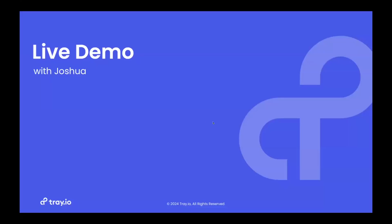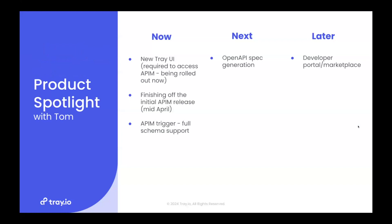Thank you very much, Luke and Joshua. Great to see that in action. What we've really done here is just an experience that enables you to basically instantly expose any Tray workflow as an API endpoint, whatever your use case might be — and that was the goal we set out with this functionality. I'll dive straight in because I know there have been a few questions around availability. Joshua was using the new Tray UI to access the API management functionality. Some of you are probably already using the new Tray UI, which is currently being rolled out. When it comes initially, it will come with an opt-in feature, and you will need to be opted into the new Tray UI to access API management.